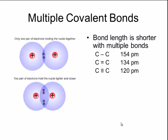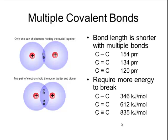Having multiple covalent bonds affects the bond length and bond energy of the atoms. The bond length is generally shorter with multiple bonds. When only one pair of electrons is being shared, the nuclei are separated by a distance with the lowest potential energy. But when two atoms share two pairs of electrons, the nuclei are held together tighter and closer, causing a shorter bond length. For example, a carbon-carbon single bond has a bond length of 154 picometers, while a carbon-carbon triple bond is 120 picometers. Since bond length is inversely proportional to bond energy, the shorter the bond length, the more energy is required to break those bonds. A carbon-carbon single bond requires 346 kilojoules to break, whereas a carbon-carbon triple bond requires 835 kilojoules.